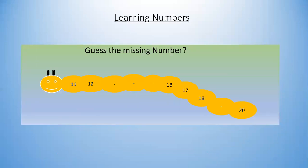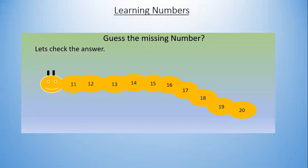Now can you guess the missing numbers? 11, 12... something is missing. One more missing number. 16, 17, 18... another missing number. And 20. Do you know what the missing numbers are? Let's check. The missing numbers are 13, 14, 15, and 19. So if you count from 11 to 20, it will be 11, 12, 13, 14, 15, 16, 17, 18, 19 and 20.